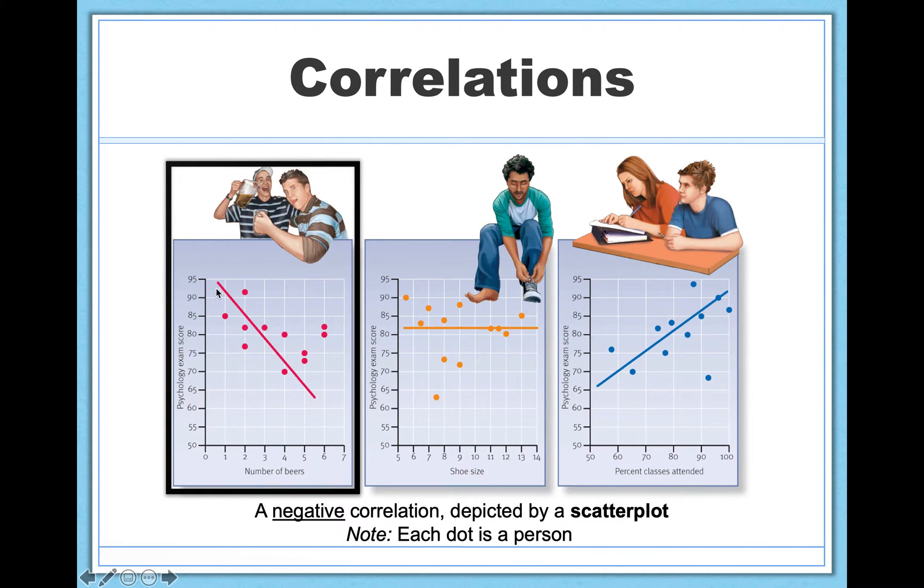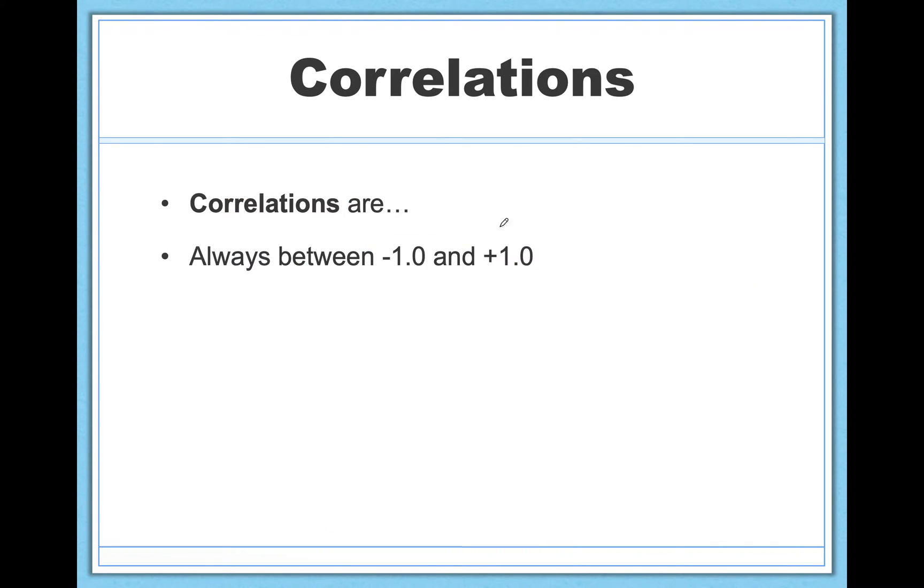And here you can find what this looks like visually on a scatterplot. This is the number of beers you consume the night before a psychology exam. And this is your grade on the psychology exam. Perhaps unsurprisingly, as x increases, the more beers you drink, y decreases, the worse you do on your exam. Unsurprising, right? Don't drink beer the night before an exam.